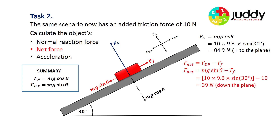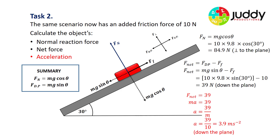We must look at this question in the context as presented. Finally, the acceleration: the net force down the plane is 39 newtons, and using Newton's second law F = ma, we divide 39 by the mass of 10, giving an acceleration of 3.9 meters per second squared down the plane. These questions are not too tricky as long as you have a diagram, label it correctly, and think about the forces up and down the plane and perpendicular to the plane.